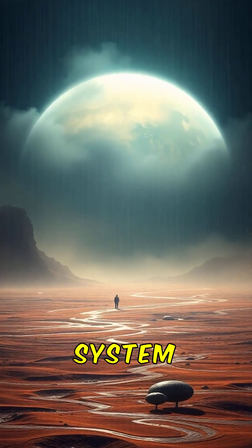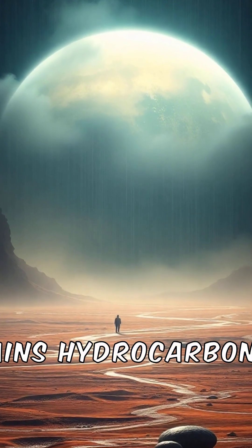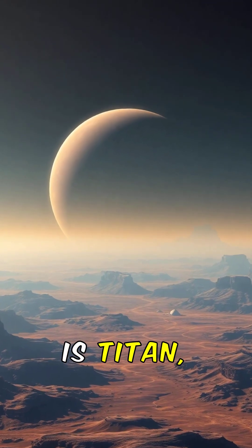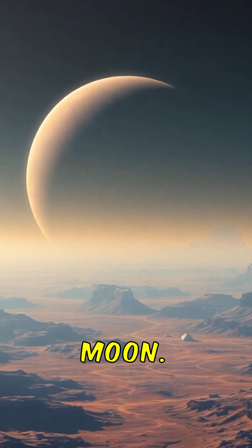There's a place in our solar system where it rains hydrocarbons, and rivers of liquid ethane and methane carve valleys. That place is Titan, Saturn's eerie Earth-like moon.